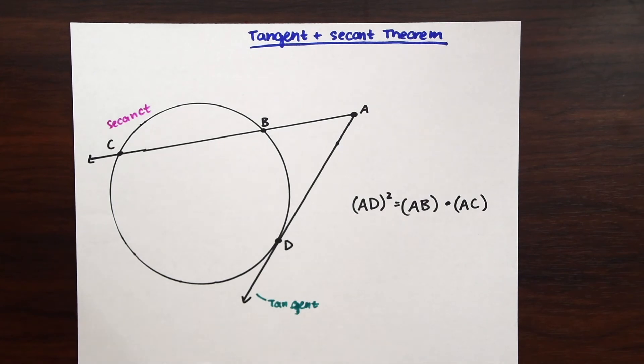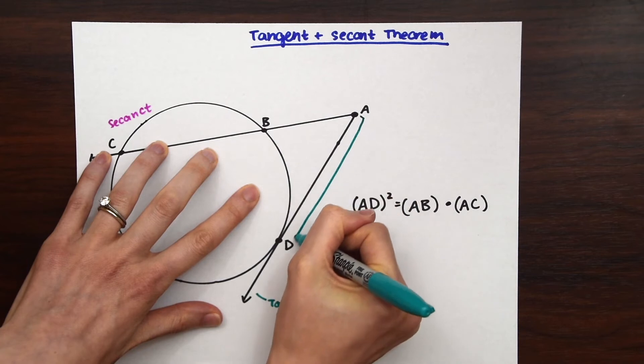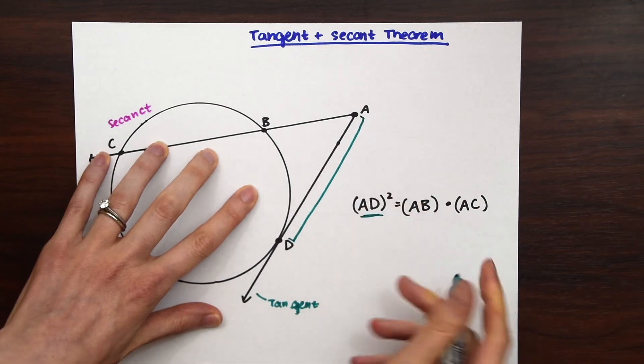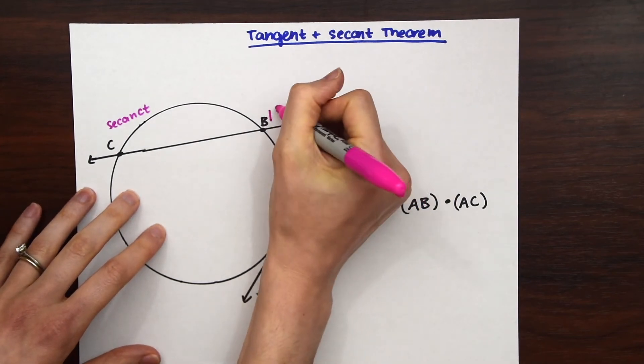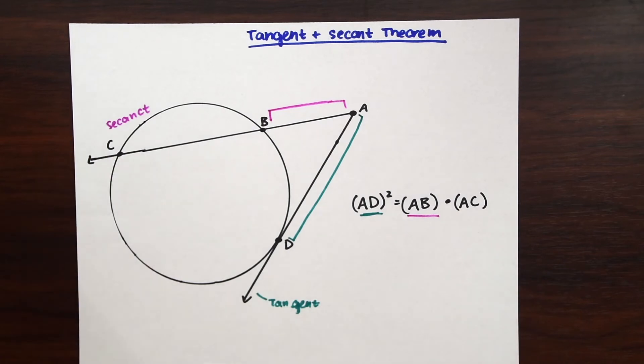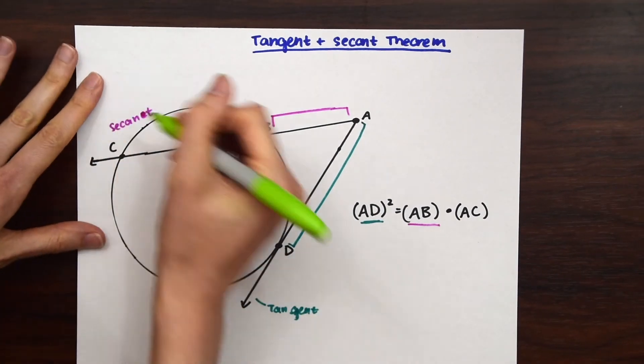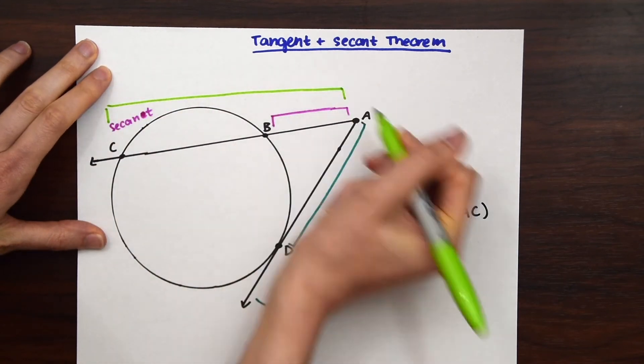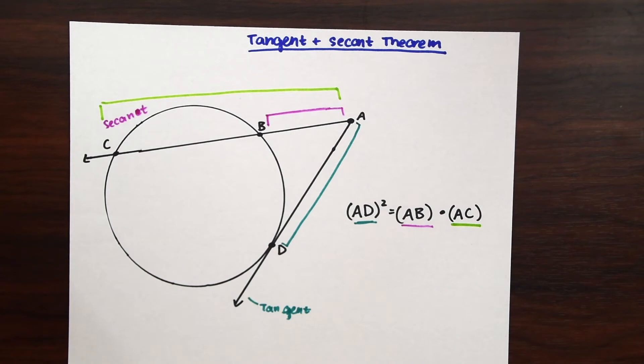So that's just the first part of our secant times AC. So AC notice represents the entire secant. So that's just what to keep in mind when we start looking at our examples, what each part of our theorem represents.